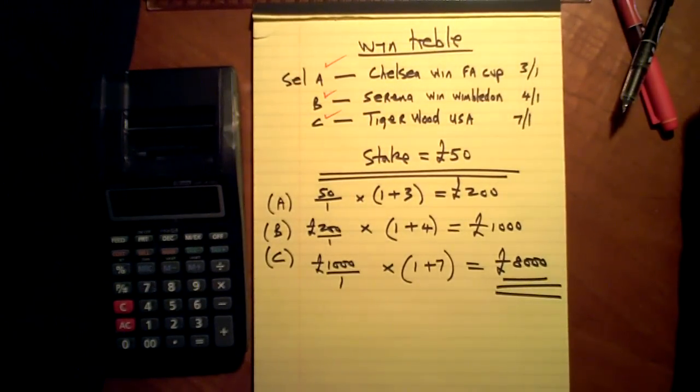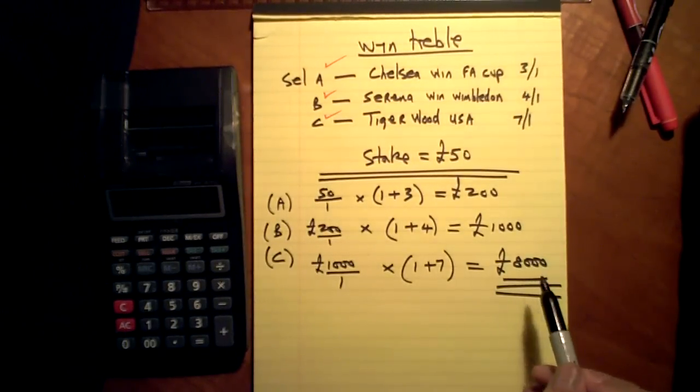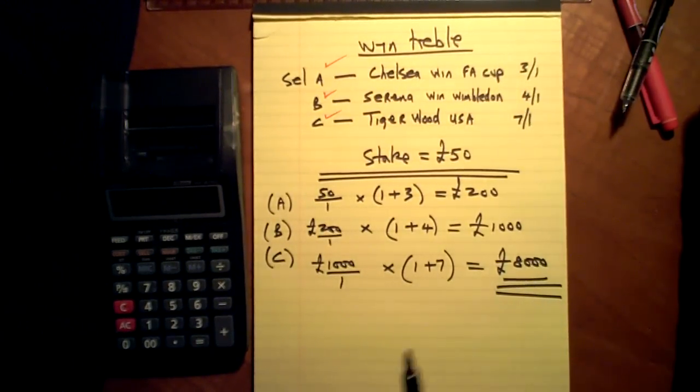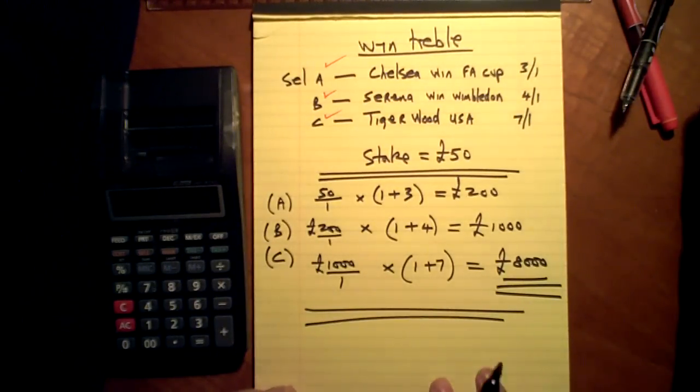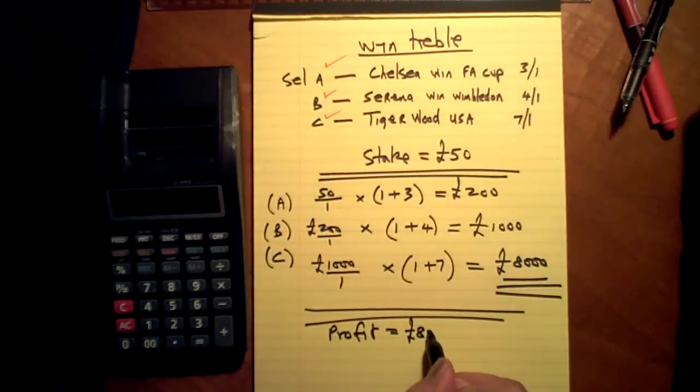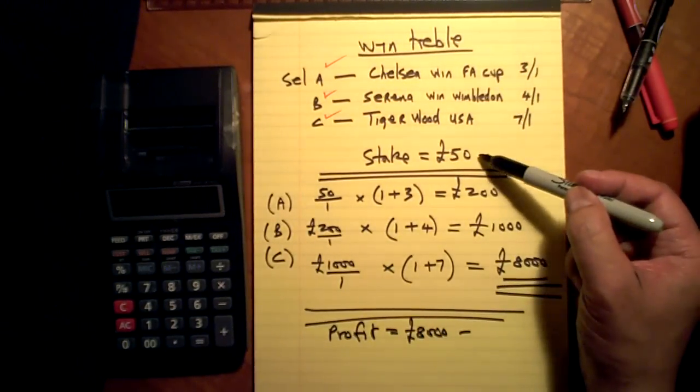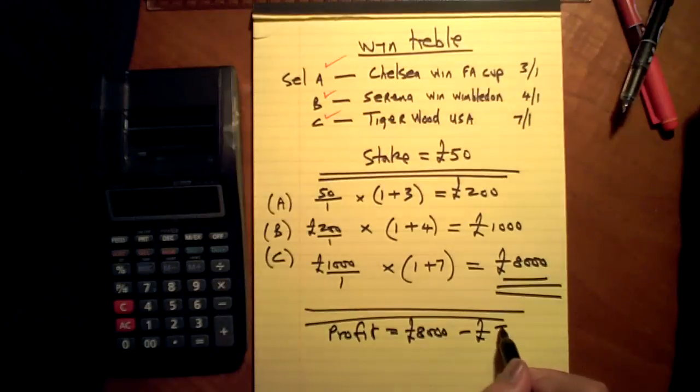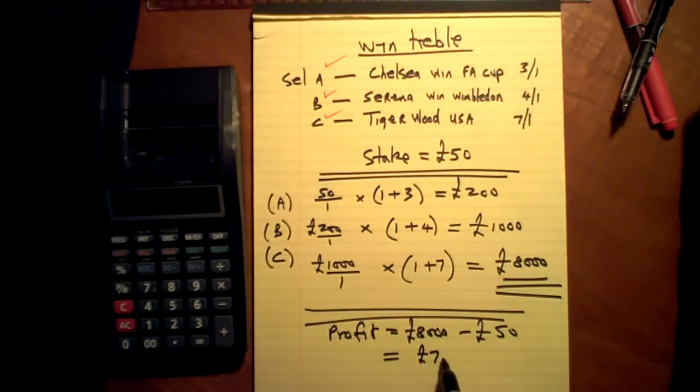I win it, my bet is a winner, the bookie will have to give me that money. Profit equals eight thousand minus what I coughed up, equals seven thousand nine hundred and fifty pounds.